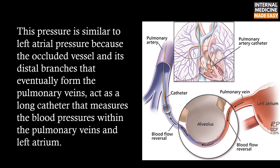This pressure is similar to left atrial pressure because the occluded vessel and its distal branches that eventually form the pulmonary veins act as a long catheter that measures the blood pressure within the pulmonary veins and left atrium.